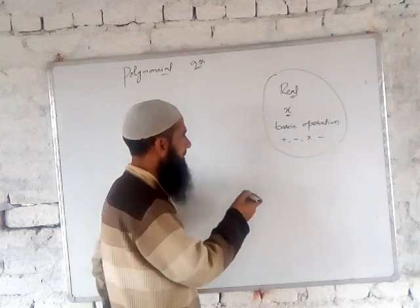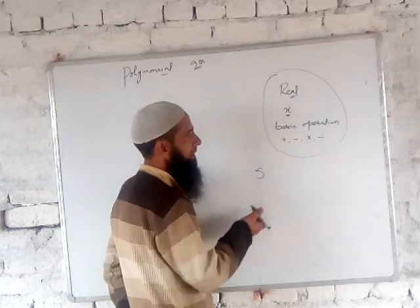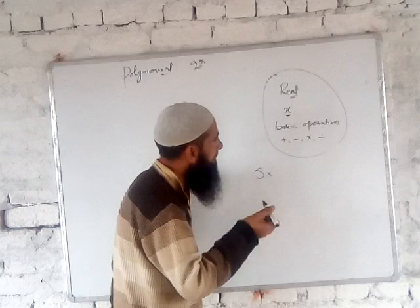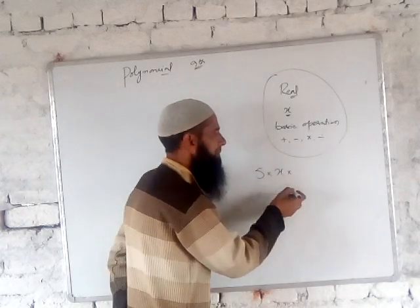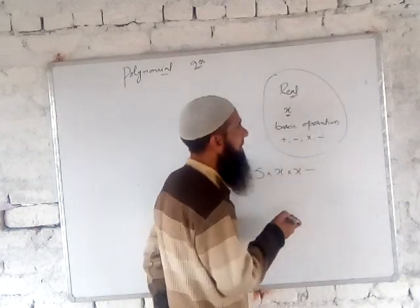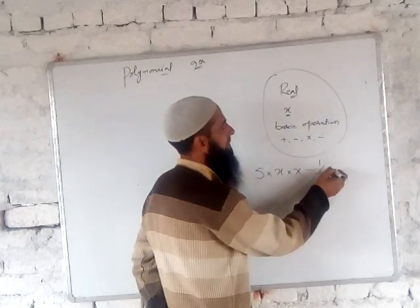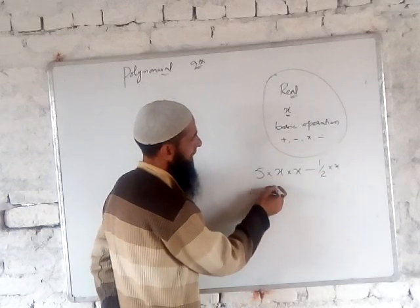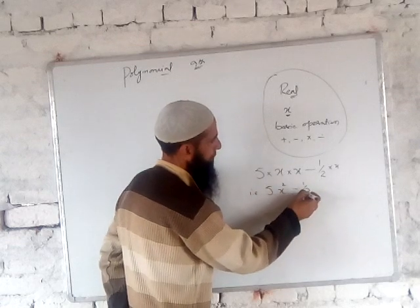Say we take a real number 5, apply the binary operation multiplication, then variable x, again multiplication with x, then from basic operations subtraction, then 1/2 multiplied by x. We get here: 5 times x times x — which becomes x squared — minus 1/2 x. So the expression is 5x² − ½x.